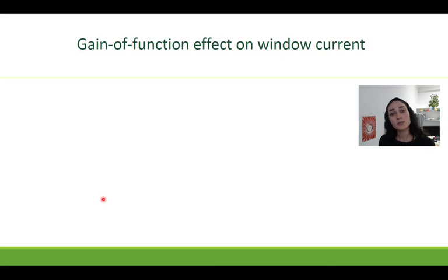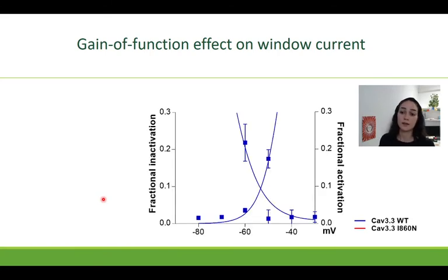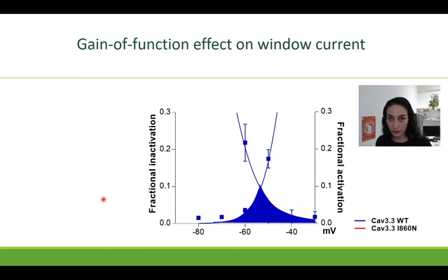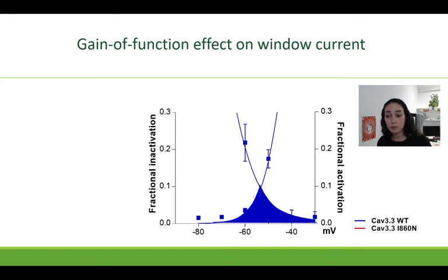This left-shifted activation also affects the window current. The window current is the overlapping area between the activation and the inactivation curves, as you can see here in blue for the wild type. This is basically the leak current at a certain voltage. And we know from literature that in Cav3.3, the window current is important to trigger spontaneous low threshold calcium spikes and for its role in rhythmic activity.